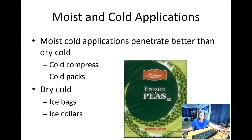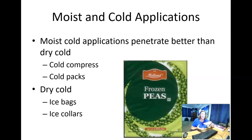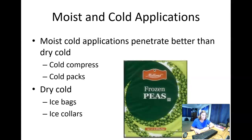A lot of people use frozen peas or frozen corn as an ice pack because it molds to the area really well. A physical therapist once taught me to make my own ice packs: take a large gallon-size Ziploc bag — I usually use two in case one gets punctured — and fill it with a half-and-half solution of 70% rubbing alcohol and water. Put that in the bag, stick it in the freezer, and it will freeze but the alcohol keeps it from freezing solid, so it makes a slushy, moldable pack that gets really cold fast. They make a beautiful, cheap ice pack. Just be careful not to puncture the bags when taking them in and out of the freezer.